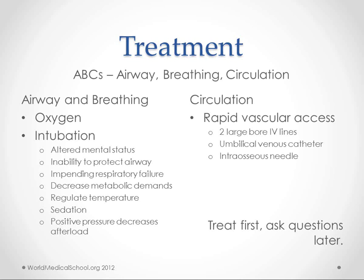For circulation, we need vascular access quickly — two large-bore IV lines, usually in the antecubital fossa bilaterally. In brand-new babies, you can use an umbilical venous catheter or intraosseous needle. A complication is that many of these children don't have much blood and their vessels are collapsed, making it hard to get lines in — which is why we may resort to umbilical venous catheter or intraosseous access.